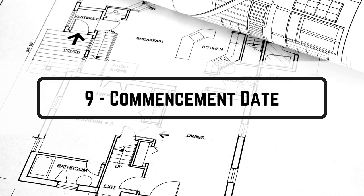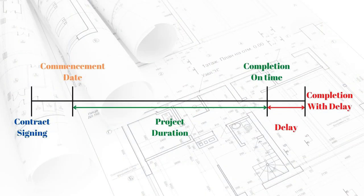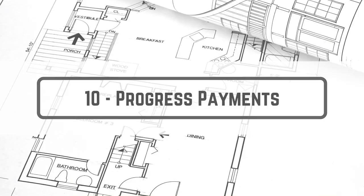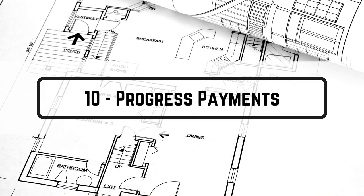Term number nine is the commencement date — the date of starting or commencing the works. You have agreed the duration, but when does it start? It could start from signing the contract, a specific date, or upon receiving a notice to commence. What matters is the point in time where the project starts, because from that point the duration starts counting. The commencement date is very important for monitoring project progress and delays.